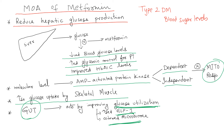If someone wants a precise main mechanism of action, it would be reduced hepatic glucose production. This is controlled at the molecular level through AMP-activated protein kinases, which inhibit mitochondrial respiration. Therefore, you have a decrease in hepatic glucose production, increased glycemic control, and improved HbA1c levels.